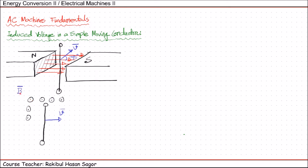B is a vector coming out of this paper — that means it's moving from the paper towards you, popping up from the paper. This conductor is moving with a velocity V and let's consider the length of this conductor is L, which is a scalar parameter. Now if we consider this side as A and this side as B, what will be the induced voltage between points A and B? The E induced will be: it's a vector parameter — V vector cross B vector, multiplied with length L.